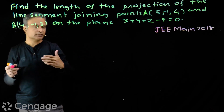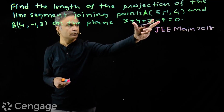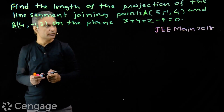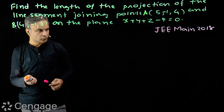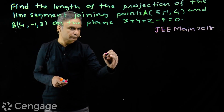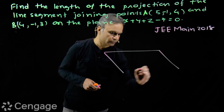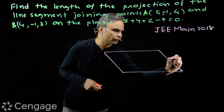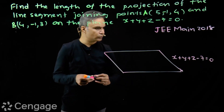Points will be on opposite sides of the plane. The expression is positive for point A and negative for point B, so points lie on opposite sides of the plane. We now have enough information to draw the diagram. We have the given plane with equation x + y + z - 7 = 0.